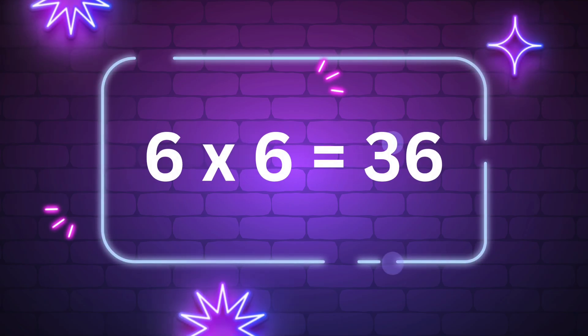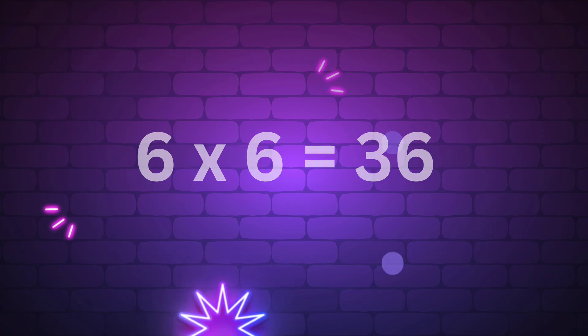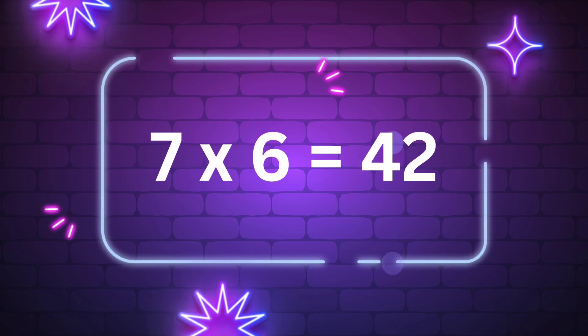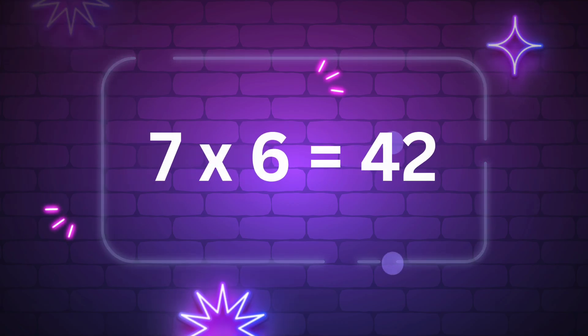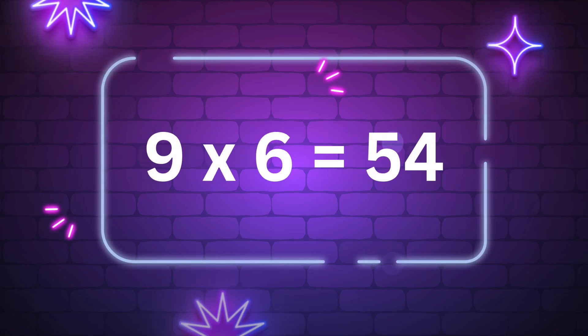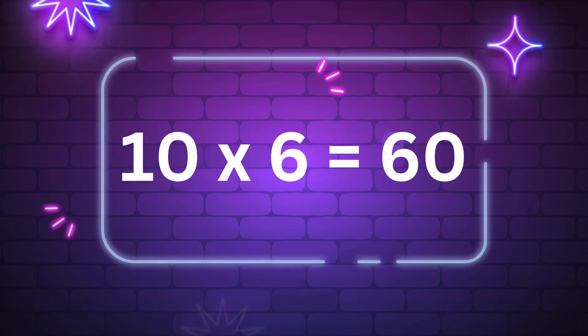Six times six is thirty-six. Seven times six is forty-two. Eight times six is forty-eight. Nine times six is fifty-four. Ten times six is sixty.